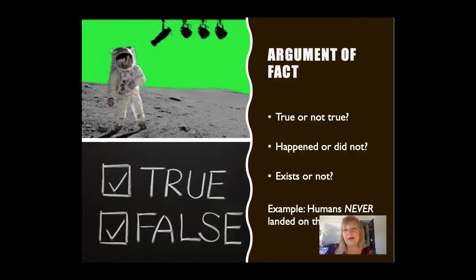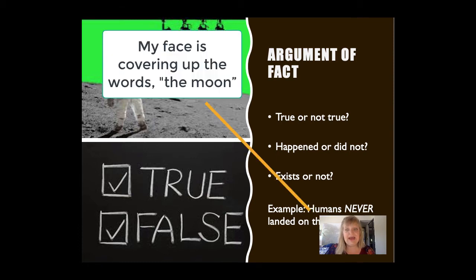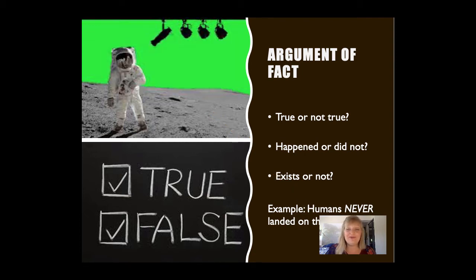Now let's talk about a few different argument types. The first is an argument of fact. When presenting an argument of fact, you are there to debate whether or not something is true or false, happened or did not, exists or does not exist. For example, one of the best student speeches I've ever seen was from an individual who argued that humans in fact never landed on the moon, and they had a plethora of evidence to support their claims.